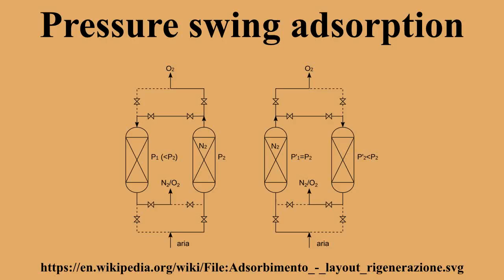Pressure swing adsorption is a technology used to separate some gas species from a mixture of gases under pressure, according to the species' molecular characteristics and affinity for an adsorbent material. It operates at near ambient temperatures and differs significantly from cryogenic distillation techniques of gas separation. Specific adsorptive materials are used as a trap, preferentially adsorbing the target gas species at high pressure.